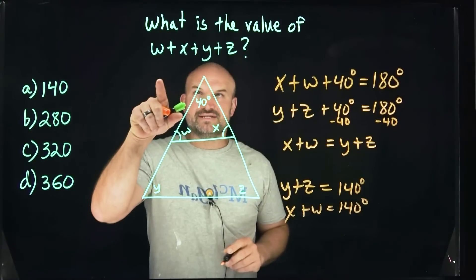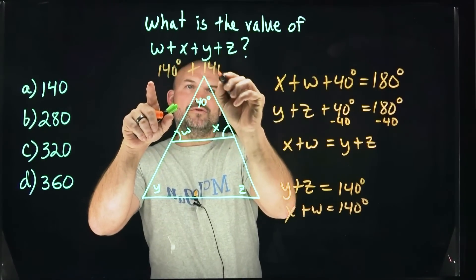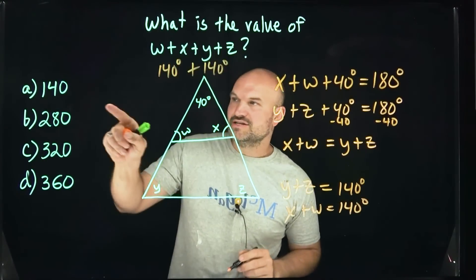So to be able to solve this, what we basically have is 140 degrees plus 140 degrees, which is going to give us 280.